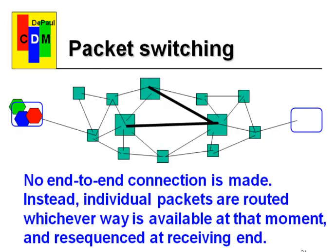Why was this done? The goal was to make the whole network more robust. Now we're looking at these little green boxes not as part of the traditional phone system, but calling them routers. They exist in various places, sometimes in conjunction with traditional telephone systems and sometimes as entirely separate facilities. The idea was: if this is the communication network, what happens if some parts of it are destroyed? Back in the Cold War, the issue of nuclear war was very much on people's minds, so if chunks of this network were torn out, how do you maintain viability between locations?